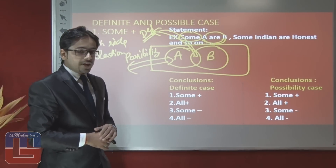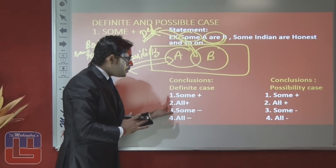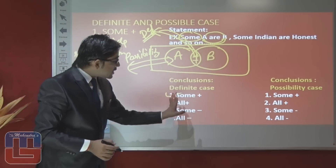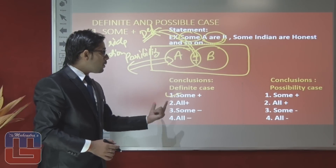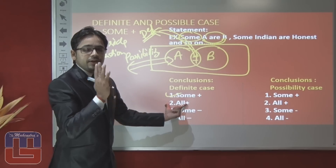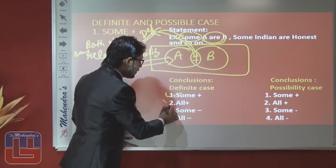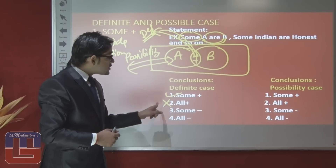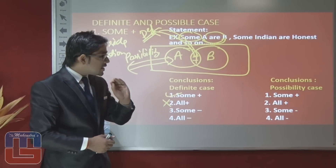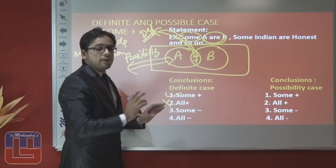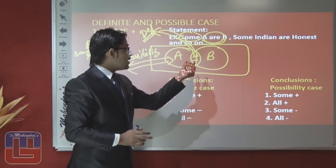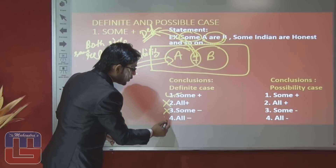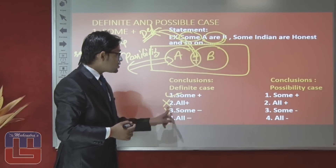In definite manner, if the examiner asks 'some A are B,' the answer is yes — we can say some part of A is B. On behalf of B, some B are A is definitely true. If the examiner asks 'all A are B' or 'all B are A,' we cannot conclude in definite manner because we only have sufficient information regarding A to B for 'some.' The third conclusion 'some A are not B' — we cannot conclude a negative conclusion from positive information, so all negative conclusions are false in definite manner. Remember: positive statement gives positive conclusion; negative statement gives negative conclusion, in definite manner.